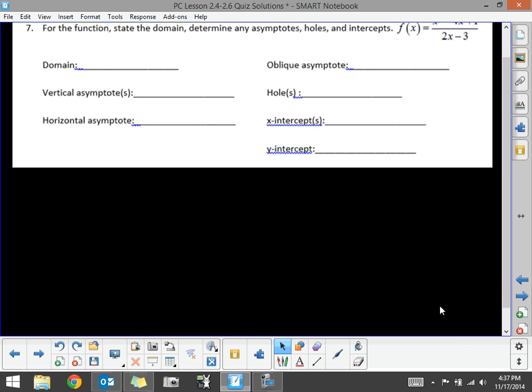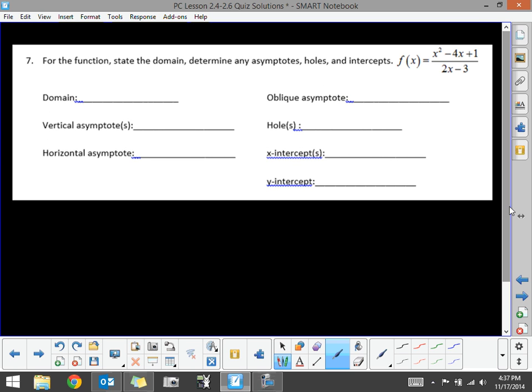In question number 7, we're doing the same type of thing to a rational function. In this rational function, we have x squared minus 4x plus 1 divided by 2x minus 3. Now this time I gave you a rational function that is not factorable. There aren't any factors of 1 that will give you a 4, so you won't be able to factor it.